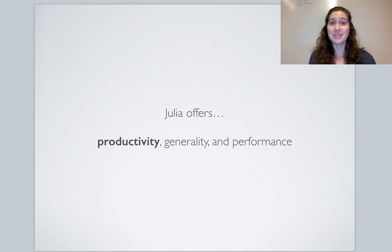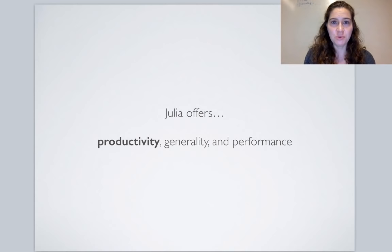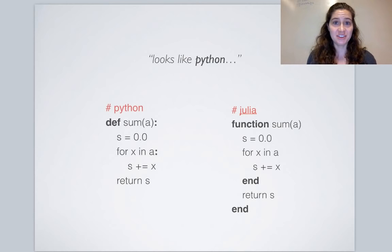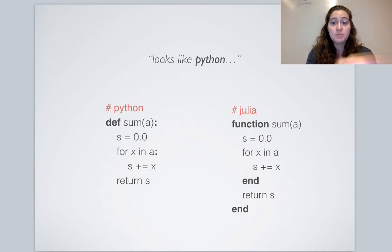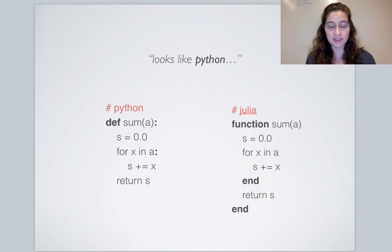We can also talk about Julia's productivity by comparing what Julia code looks like versus other high-level languages. Looking at implementations of the sum function in Python and Julia side by side, they're really not that different. There are minor syntactic differences — Python uses 'def', required colons, and indentation; Julia uses 'function' and 'end' keywords with no colons — but we can express ourselves nearly the same way, while the Julia code gives more than an order of magnitude performance improvement.